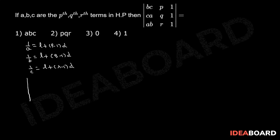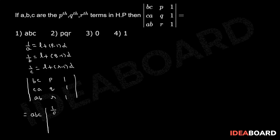Now we have to find the value of the determinant of BCP1, CAQ1, ABR1. By multiplying and dividing with ABC, we have ABC into the determinant where, dividing the first column by ABC, we get 1/A, 1/B, 1/C in the first column; P, Q, R in the second column; and 1, 1, 1 in the third column.